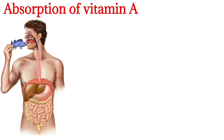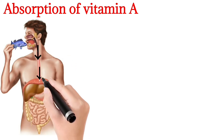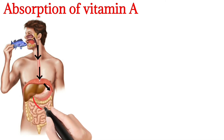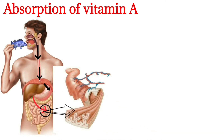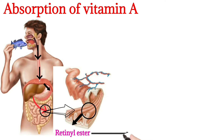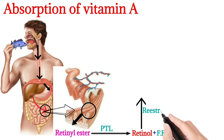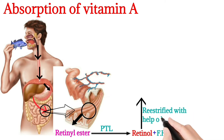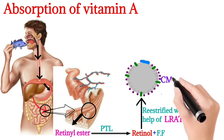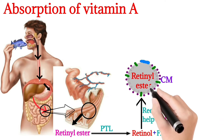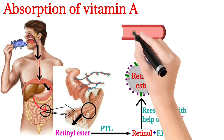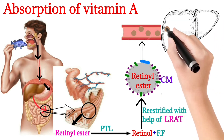Absorption of Vitamin A: it goes from the stomach to the intestine, where it is present in the form of retinyl esters. Retinyl esters are converted into retinol and free fatty acids in the presence of the enzyme pancreatic triglyceride lipase. It is then re-esterified with the help of the enzyme lecithin retinol acyltransferase.